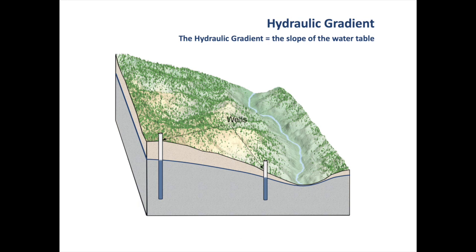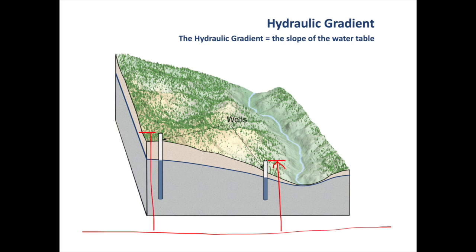If we have two wells as shown here, we can measure the difference in their water levels if we know the elevations of the wells above a datum, usually mean sea level. What we want to know is the elevation of each well above mean sea level — that's this distance here. Then we measure our depth to the static water level, and we end up with the elevation of the water table. So here's the elevation of the first water table, and here's the elevation of our second water table. Delta H will be the difference in the water elevations between the two wells, and delta L is the horizontal distance between them.